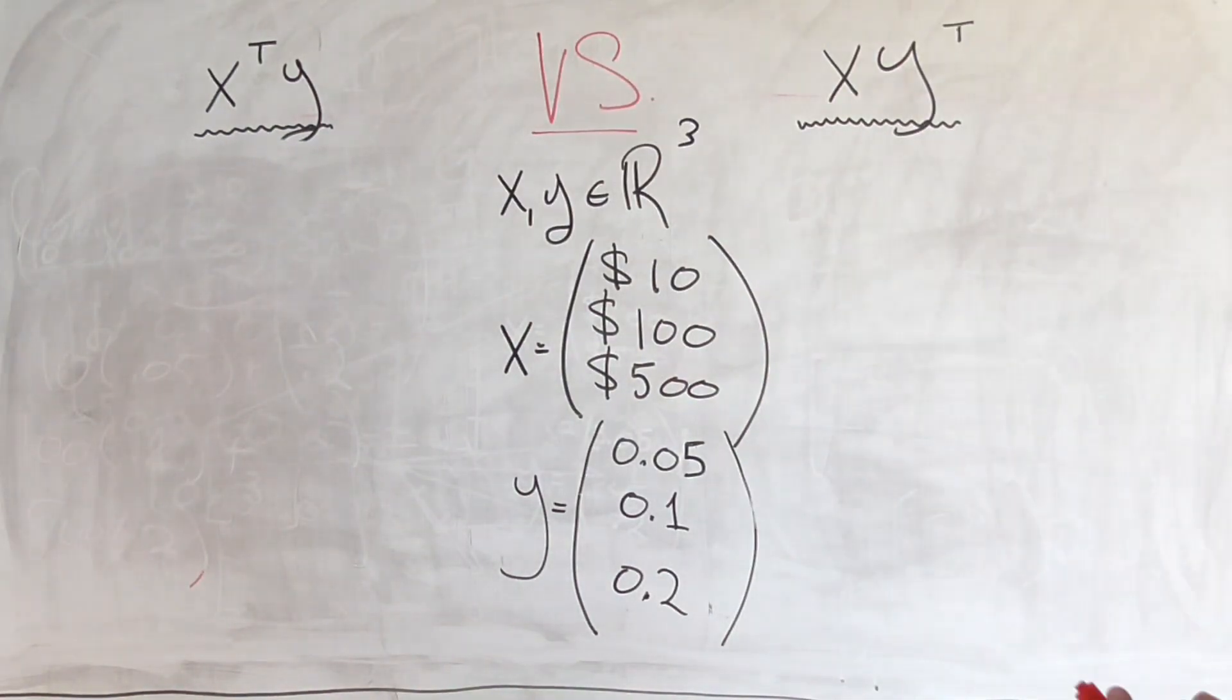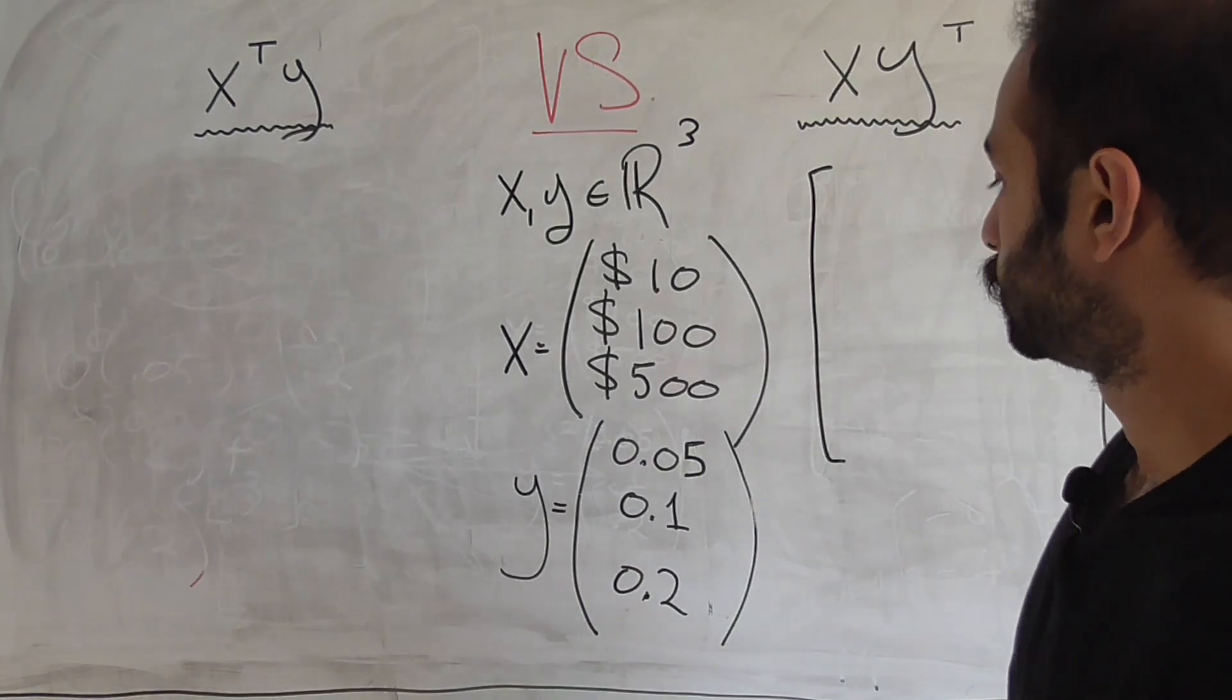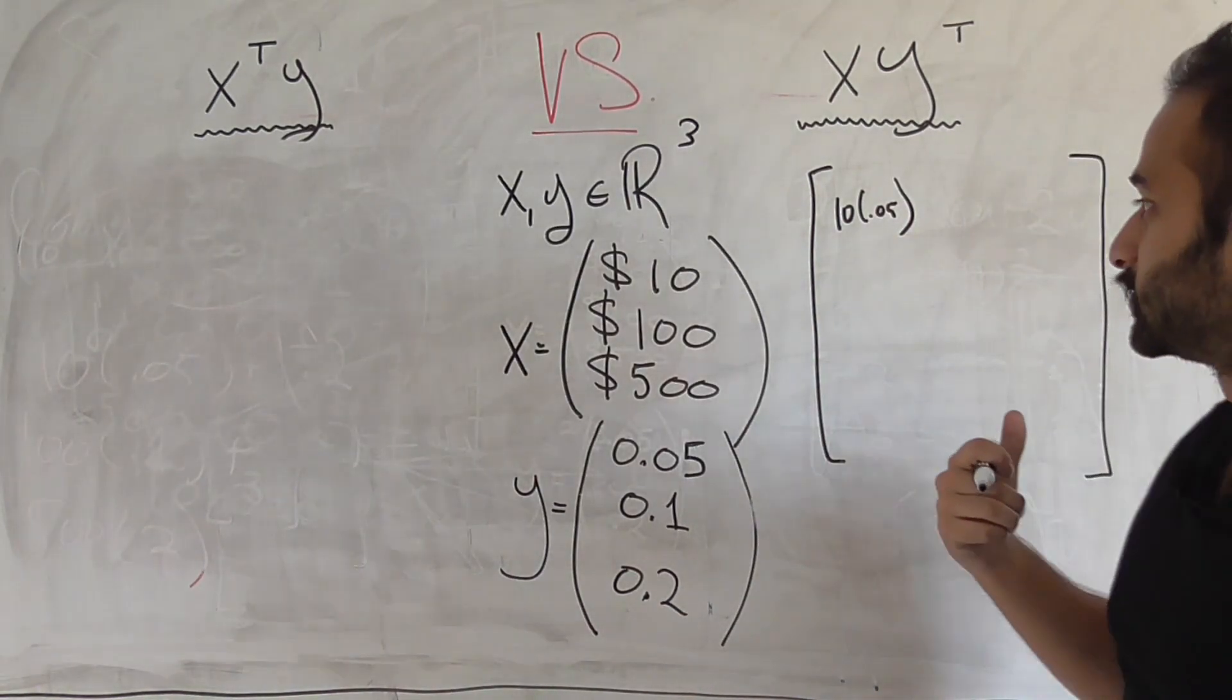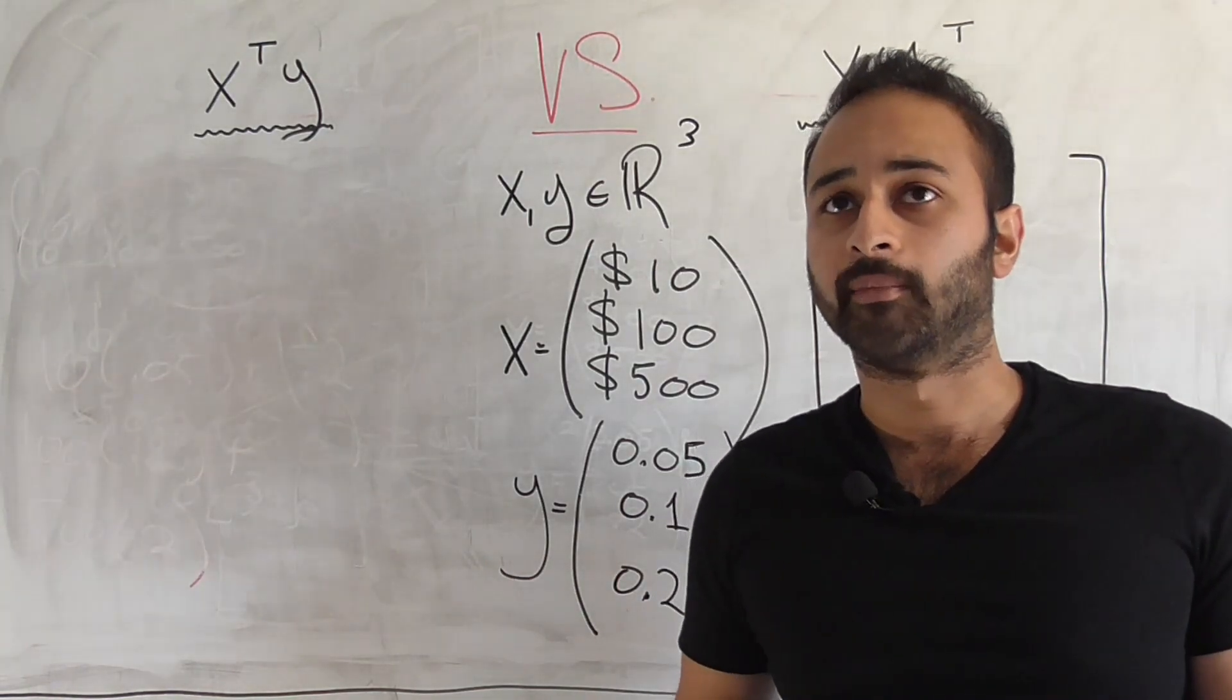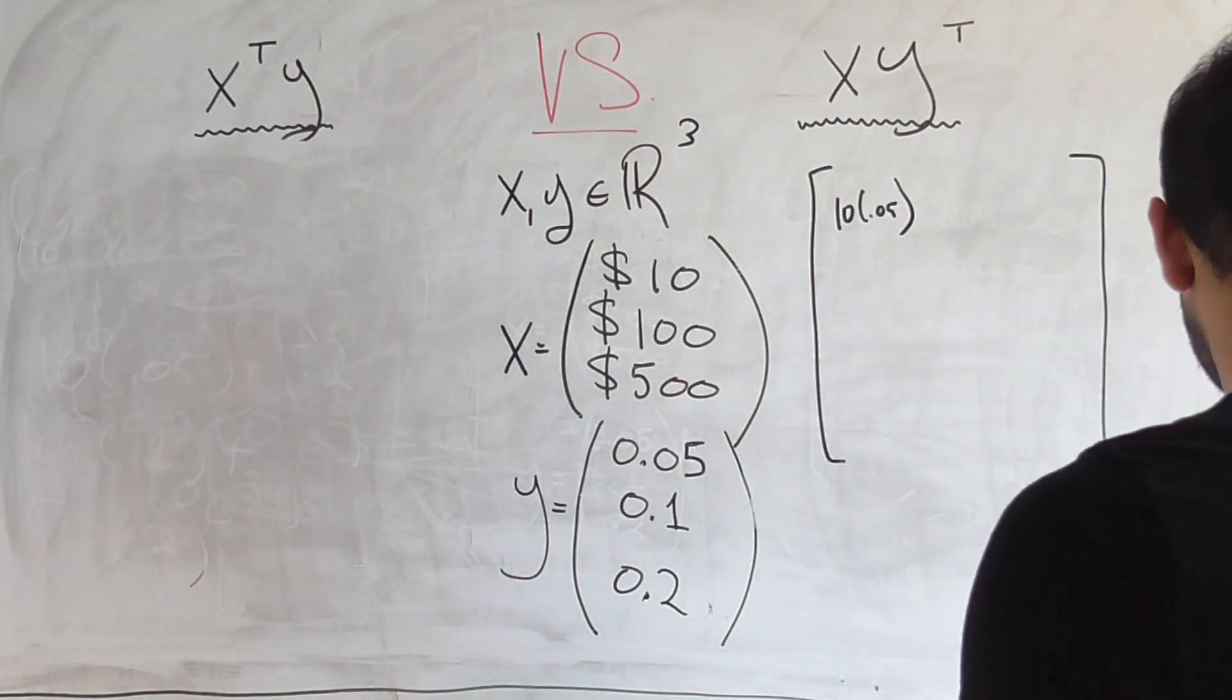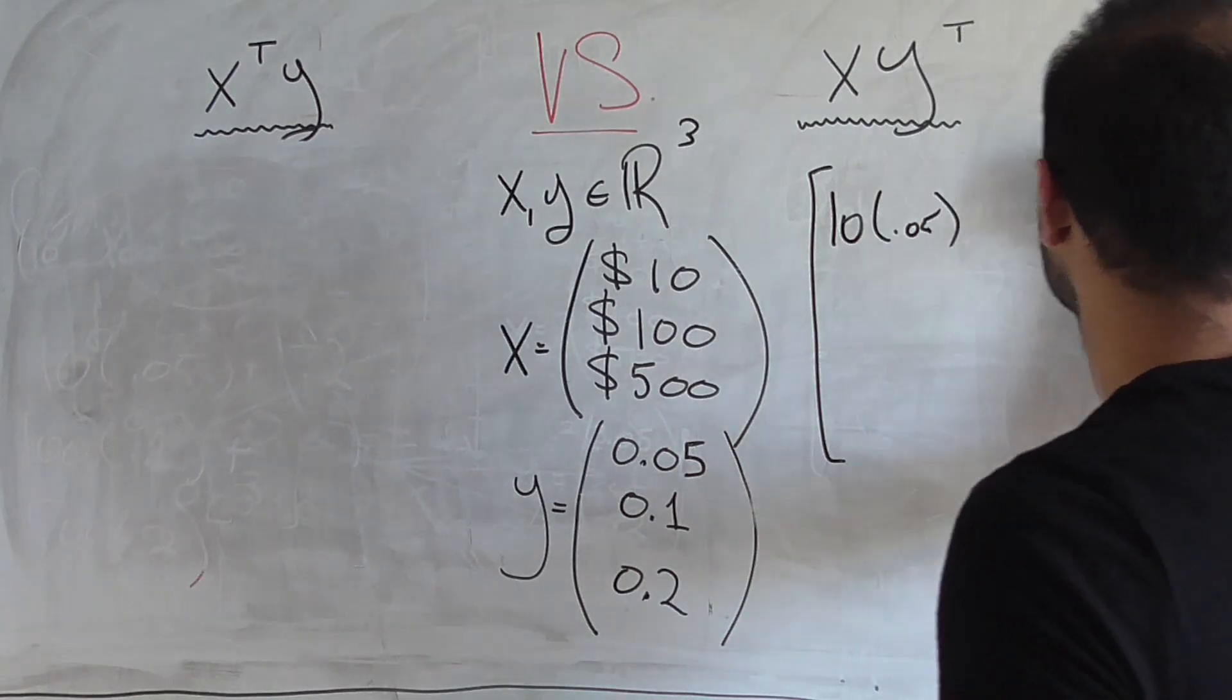So the matrix is going to look pretty straightforward. It's going to be a 3 by 3 matrix. So here, 3 by 3. The first element is going to be 10 times .05. 10 times .05. And what does that tell me? 10 times .05 basically tells me that of my $10 that I spent on my food, 5% goes to city taxes. So that's the total amount that went towards city taxes for my food. Let me try to make that a little bit bigger, just so you guys can see it. So that's going to be 10 times .05 as the first element.